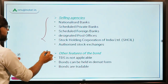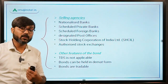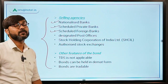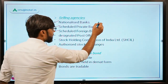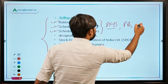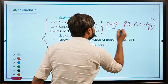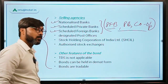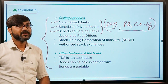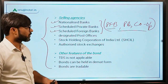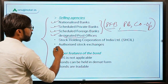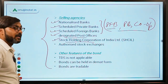Regarding the selling agencies — where can these bonds be purchased? They can be purchased through nationalized banks, private banks, and foreign banks. Note that small finance banks, payment banks, and co-operative banks are not eligible to sell these Sovereign Gold Bonds. In addition, designated post offices, the Stock Holding Corporation of India Limited, and authorized stock exchanges are also eligible selling agencies.